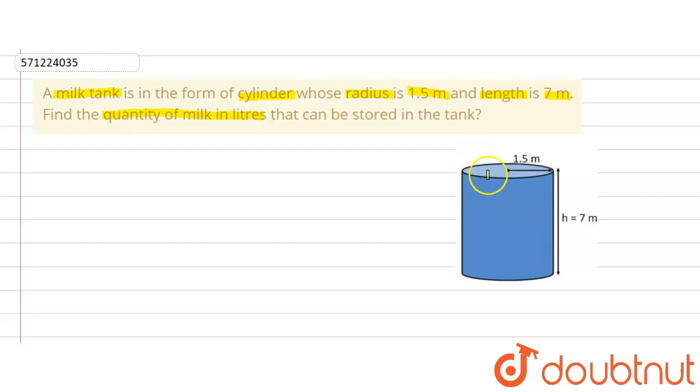A milk tank is in the form of a cylinder. It will look something like this, where the radius is 1.5 meter and the height is 7 meter. We are supposed to find out the quantity of milk that can be stored in it.